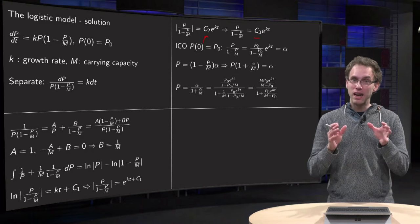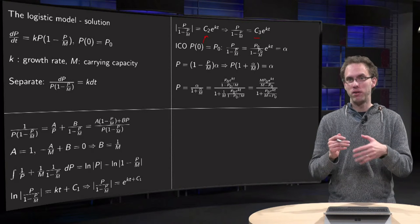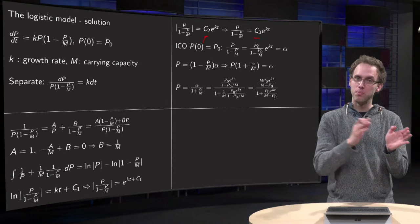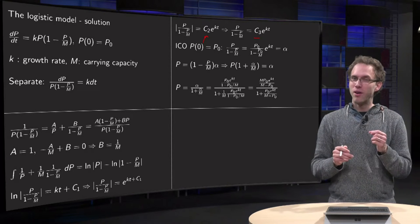We still want to have P explicitly in terms of t. Now we have it basically vice versa, we have t in terms of P, but we want to have P in terms of t. So, what do we do?